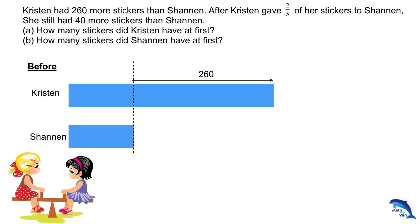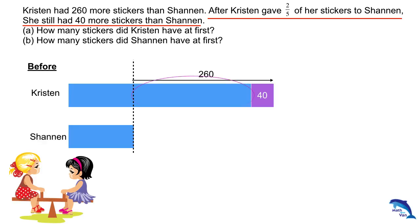After Kristen gave two-fifths of her stickers to Shannon, she still had 40 more stickers than Shannon. Bear in mind, in the end, the difference is 40. And since 40 is less than 260, a portion of the 40 here is actually a portion of the 260. Then what do I do with this portion? I am going to divide it into two parts — you will understand why later.